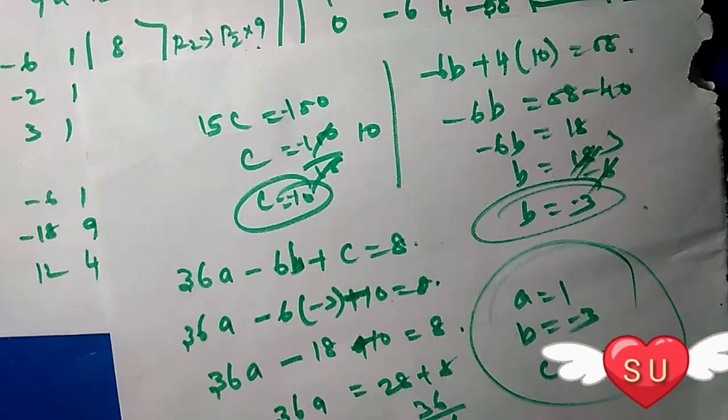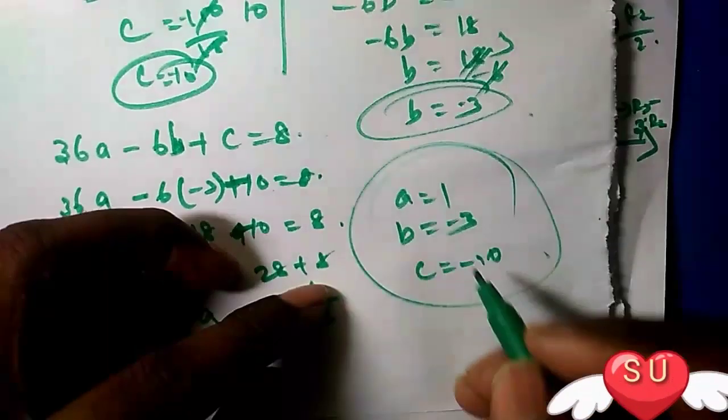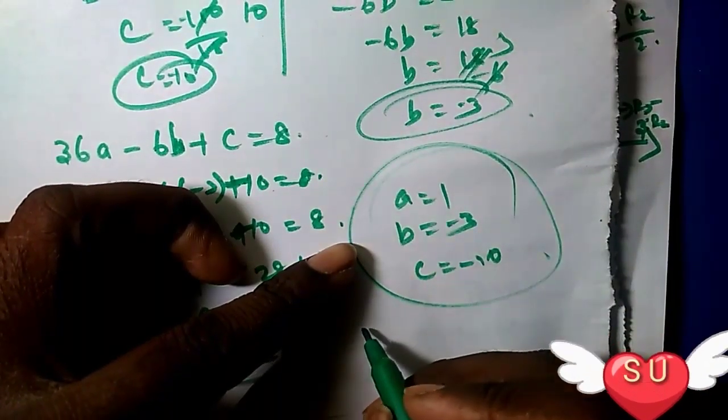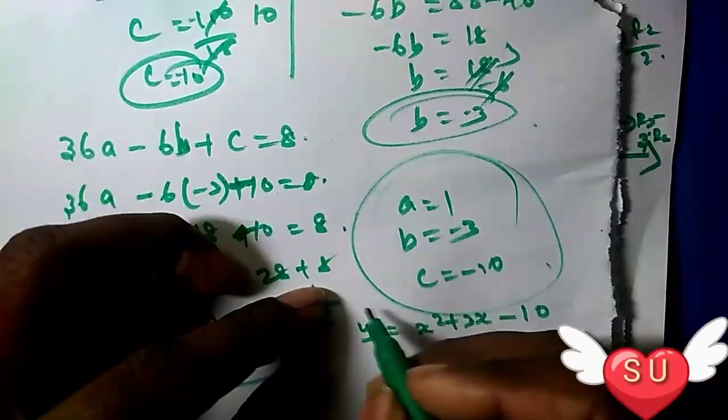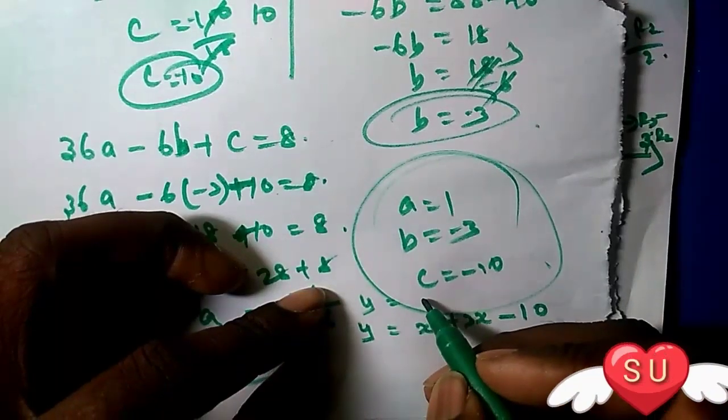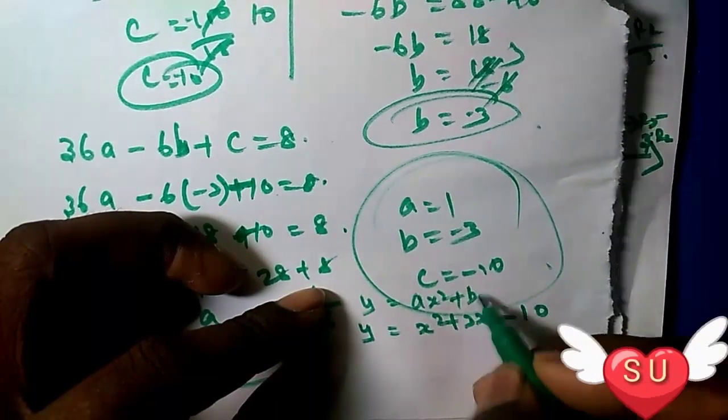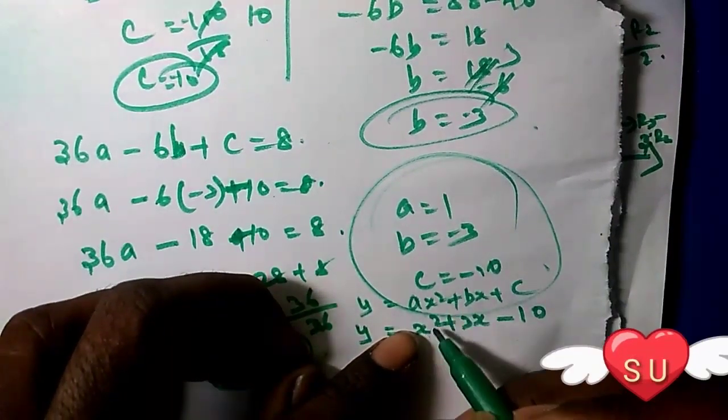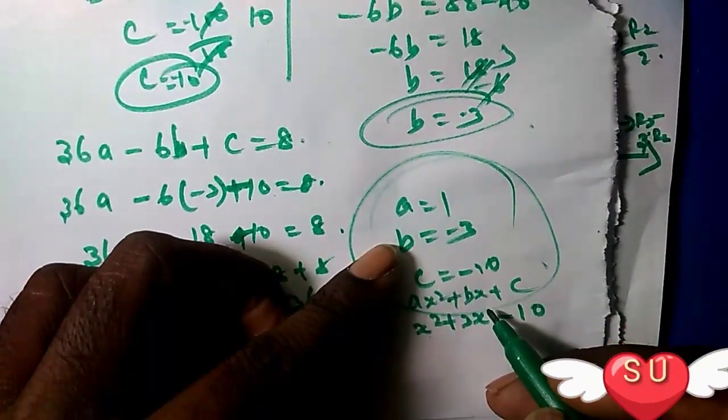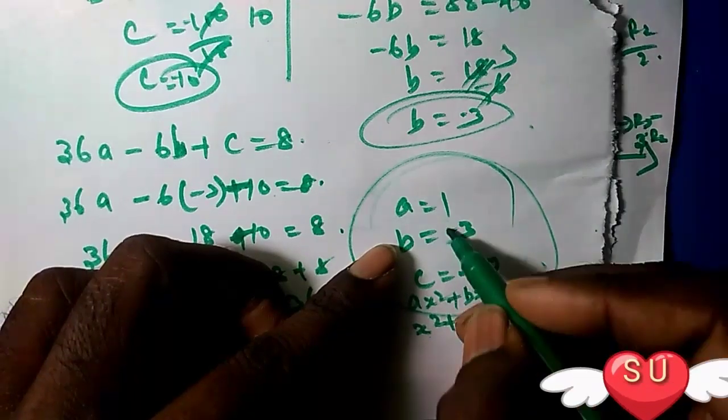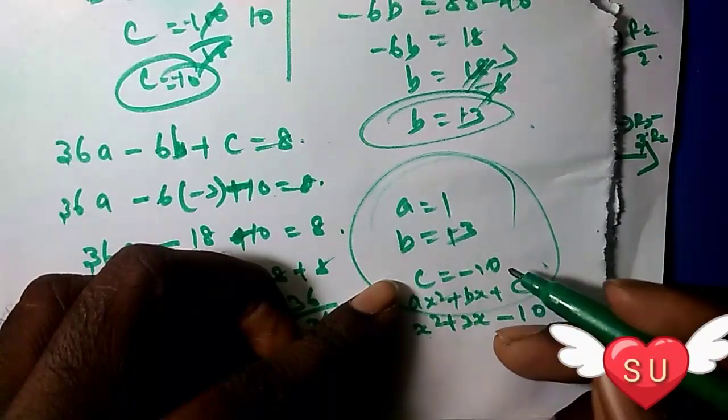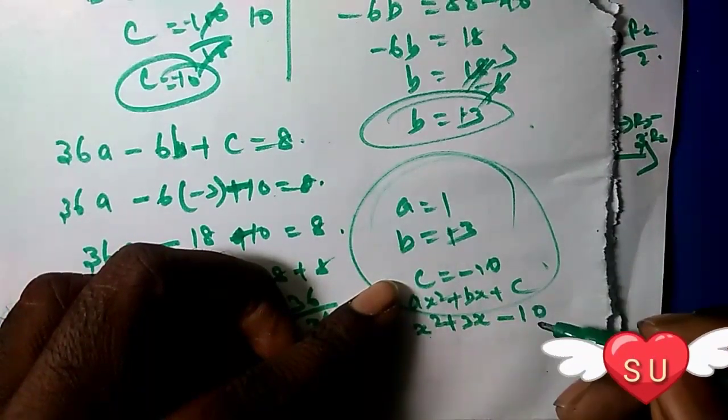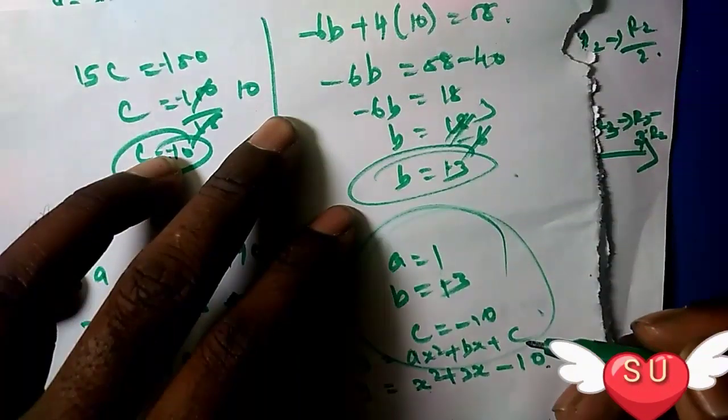Next problem: y = x² + 3x - 10. This is in the form y = ax² + bx + c where a = 1, b = 3, and c = -10.